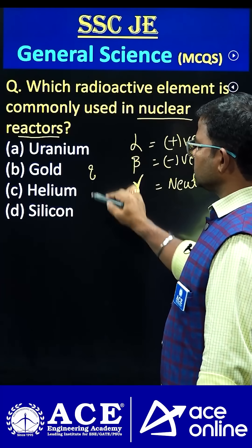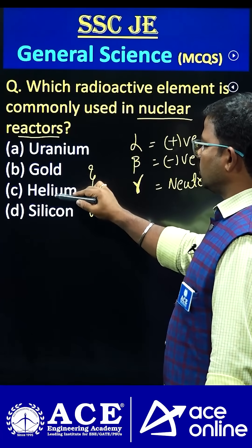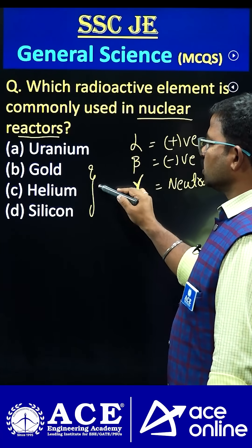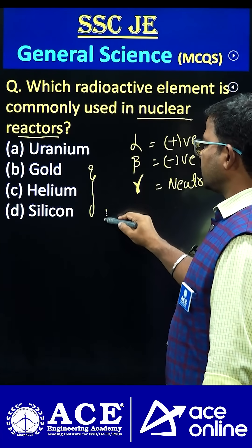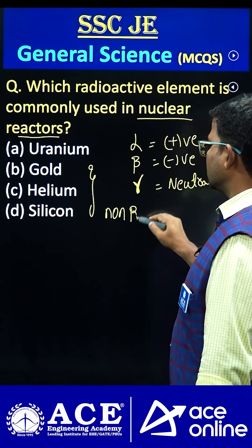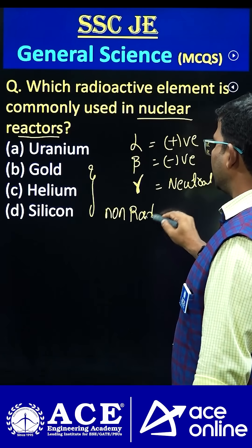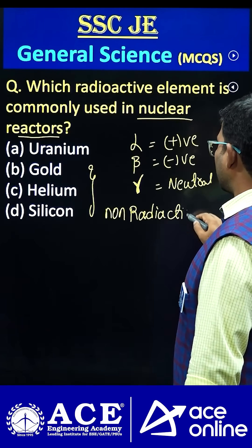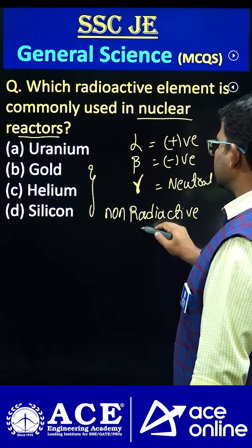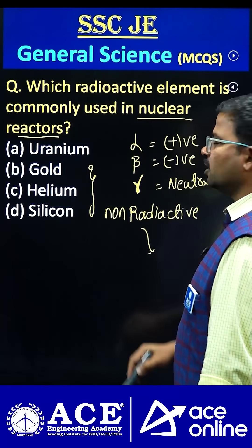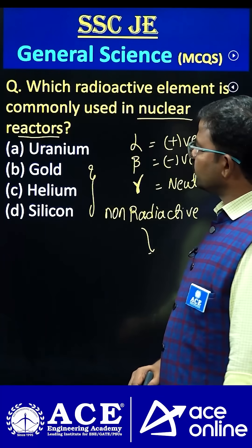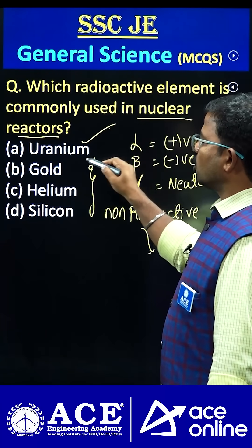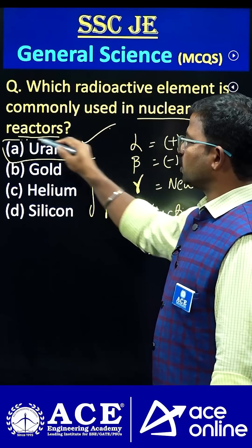The remaining three elements — gold, helium, and silicon — are all considered non-radioactive elements. This means they do not emit any alpha, beta, or gamma radiation. That's why the correct answer is option A: uranium.